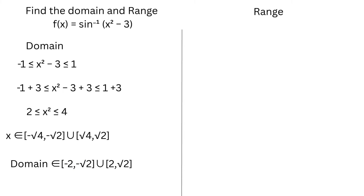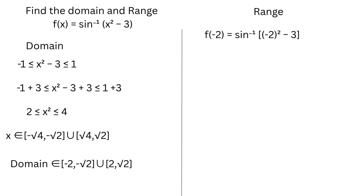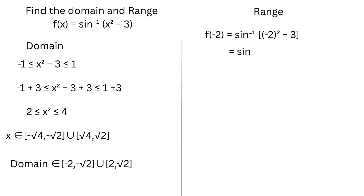Now, in order to get the range, we are going to replace x with these boundary values in the function. Replacing x with -2 in the function, we get sin⁻¹((-2)² - 3). (-2)² is 4, and 4 - 3 is 1, so we get sin⁻¹(1), which is equal to π/2.